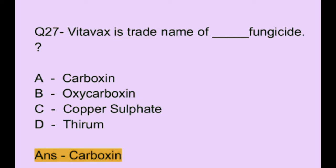Question number 27. Options for the question: Option A: carboxin. Option B: oxycarboxin. Option C: copper sulfate. Option D: thiram. The correct answer is option A, which is carboxin.